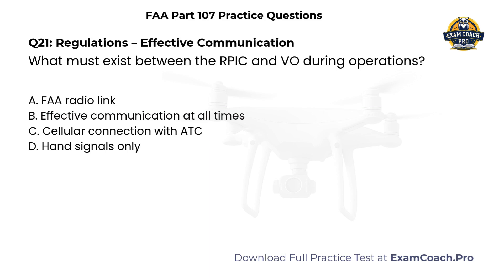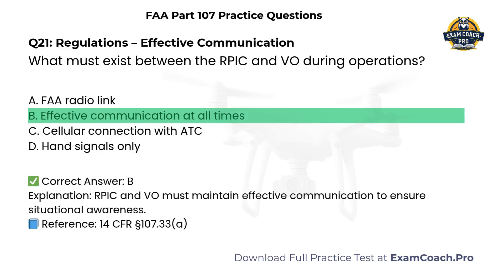Regulations. Effective communication. What must exist between the remote pilot and visual observer during operations? A. FAA radio link. B. Effective communication at all times. C. Cellular connection with ATC. D. Hand signals only. Correct answer: B. The RPIC and VO must maintain effective communication to ensure situational awareness.